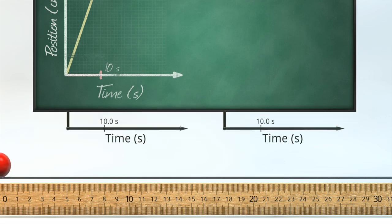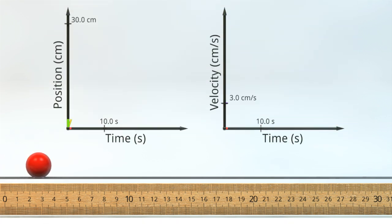Let's see what the velocity graph looks like now. It's a straight horizontal line. To make things easier to see, let's stretch out the time axis.